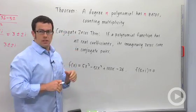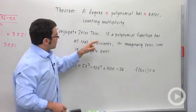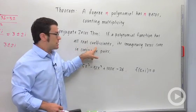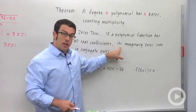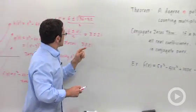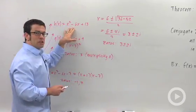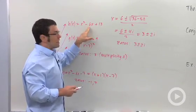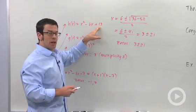The conjugate zeros theorem is another important one. If a polynomial function has all real coefficients, and most of the ones we study do, its imaginary zeros come in conjugate pairs. Just to show you, this was an example of that. This function h of x, this has all real coefficients, 1, negative 6, and 13 are real numbers.